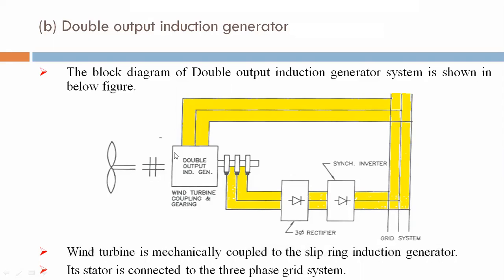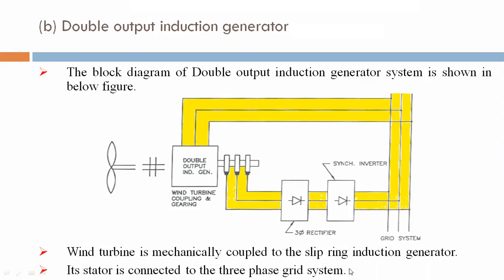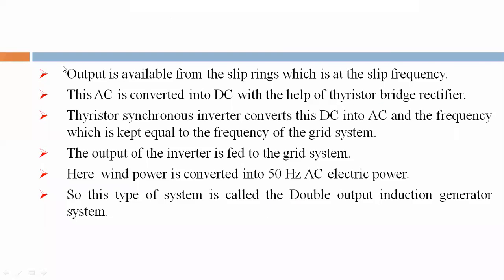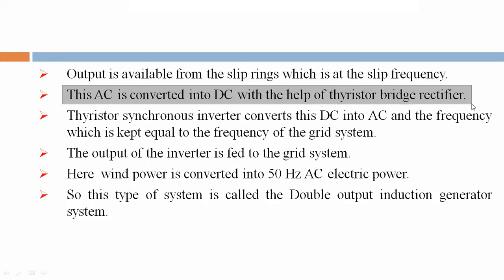The wind turbine is mechanically coupled to the slip ring induction generator. Its stator is connected to the three-phase grid system. Output is available from the slip ring, which is at slip frequency. This AC is converted into DC with the help of a thyristor bridge rectifier.